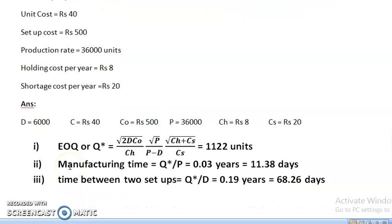First we have to find out the optimal load. Optimal load means Q optimal or EOQ. When we substitute the values in the equation, we get the answer 1122 units.